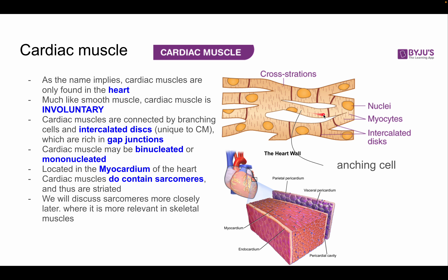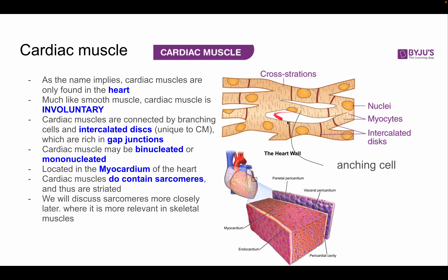Here is a branching cell, which forms a net between different lines of cells. These are also called fibromyocytes or cardiomyocytes. Some cells have two nuclei, making them binucleated.